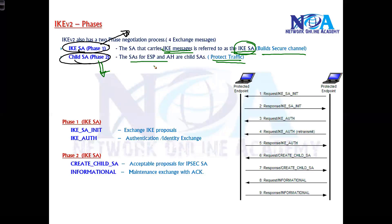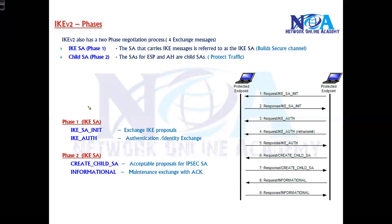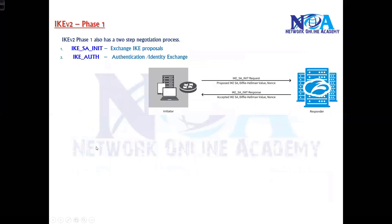In the Child SA, both peers decide what encapsulation and protocols will be used for encrypting or hashing the traffic. Technically the names are different but the process is similar to IKEv1, with the messages grouped together. We'll separate this into two parts, starting with phase one's two-step negotiation process.